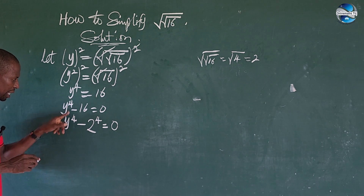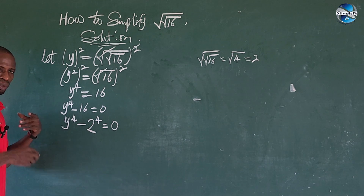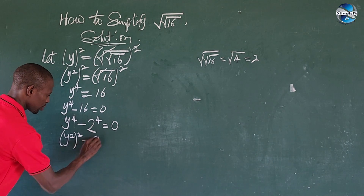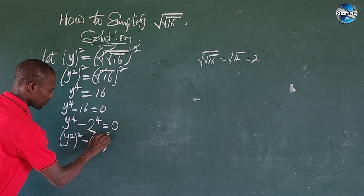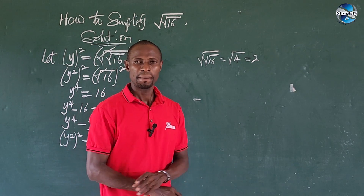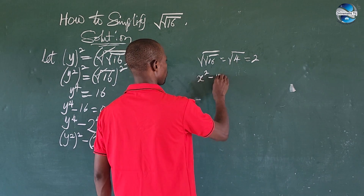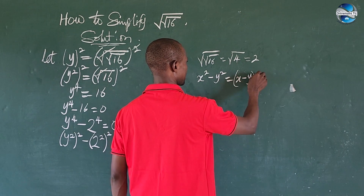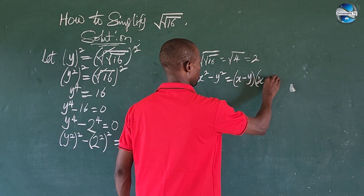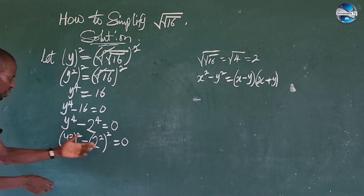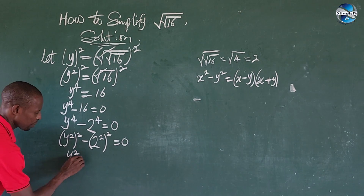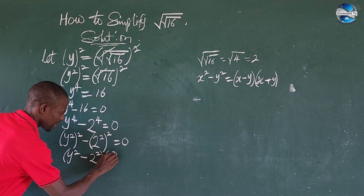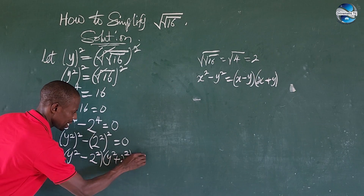Because of this power of 4, I want to split it as 2 times 2, giving us (y²)² minus (2²)² equals zero. Remember the difference of two squares: x² minus y² equals (x minus y)(x plus y). Applying that here, we get (y² minus 2²)(y² plus 2²) equals zero.